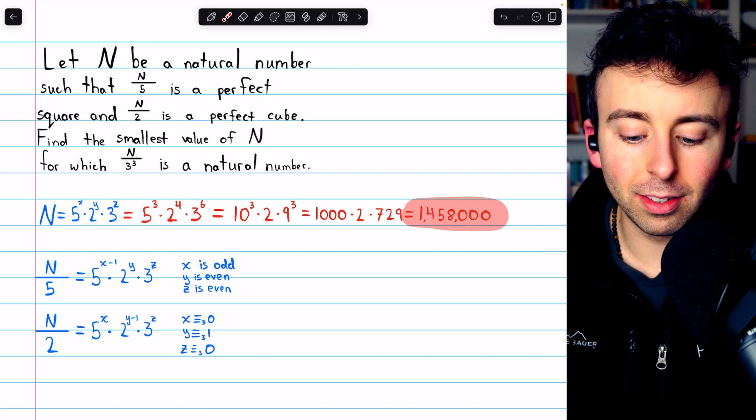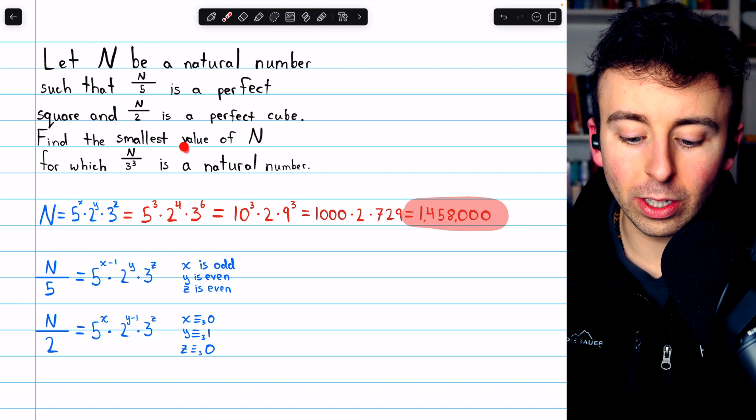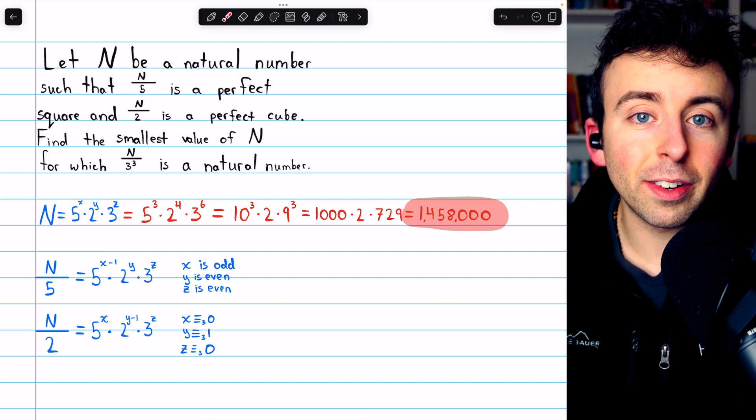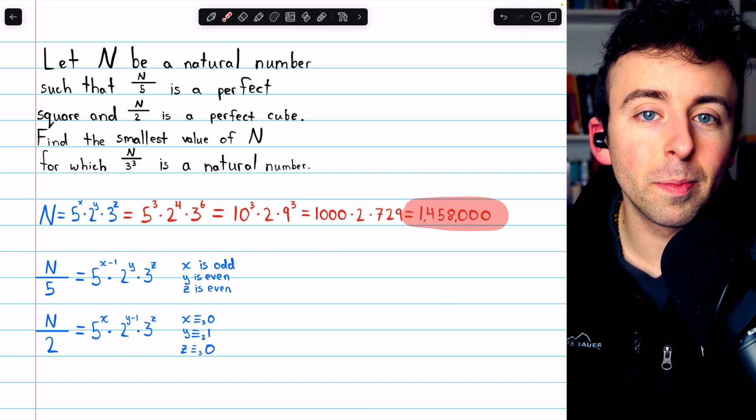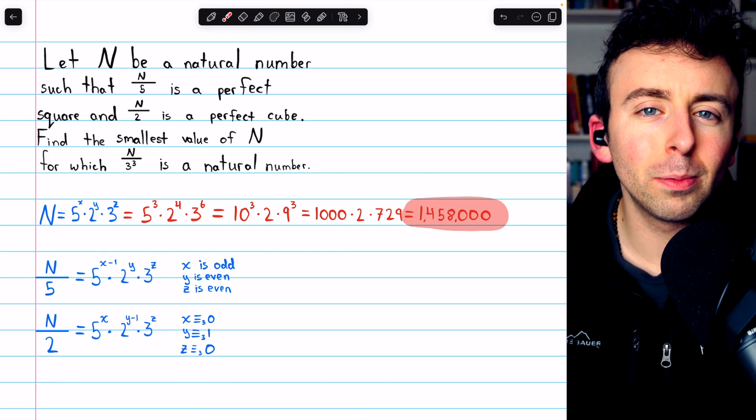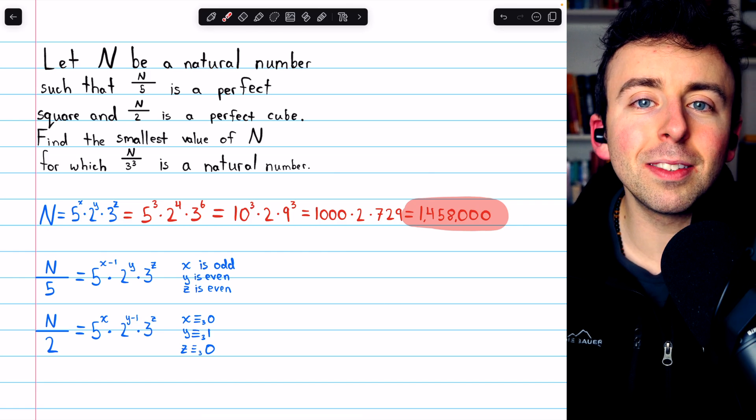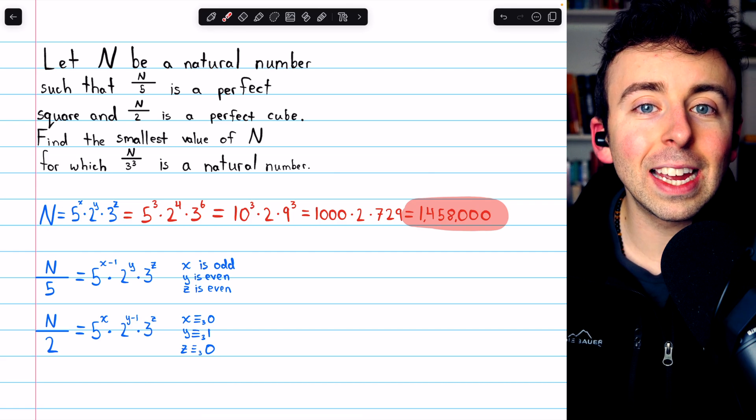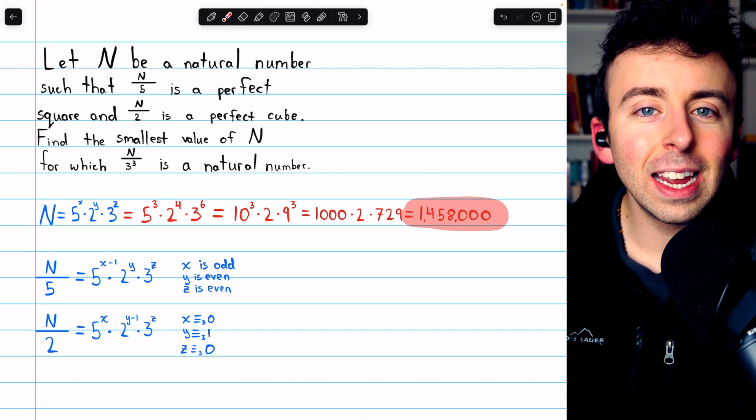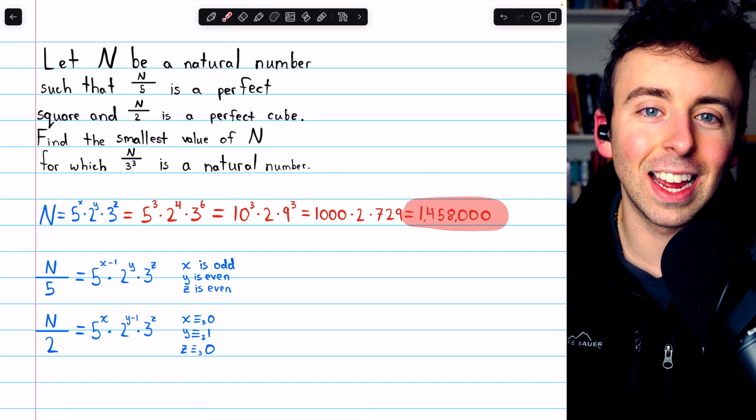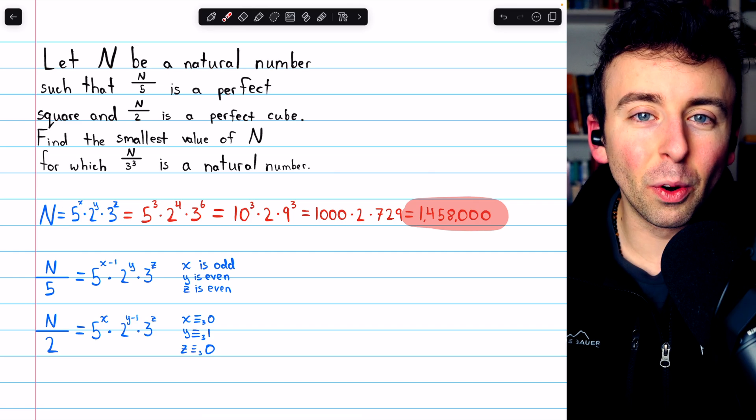That's the smallest positive integer N that's going to satisfy all of these criteria. Let me know in the comments if you have any questions or your own solution for this problem. And if you're looking for more interesting math problems, check out my playlist in the description. If you want to help support Wrath of Math, please consider joining the channel for early and exclusive access to certain videos and lots of other perks, including access to lots of original songs that I use in the videos. Thanks for watching.